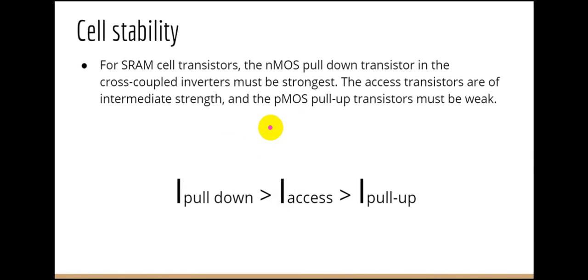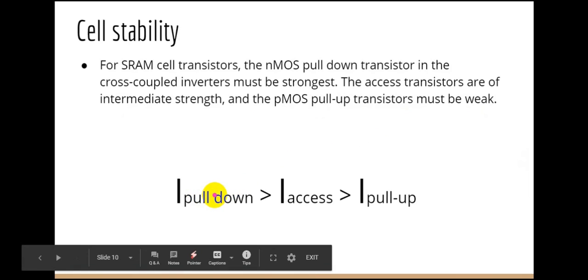For SRAM cell transistors, the NMOS pull-down transistor in the cross-coupled inverters must be strongest, the access transistor at intermediate strength, and the PMOS pull-up transistors must be weak. So I_D,pulldown > I_access > I_pullup.